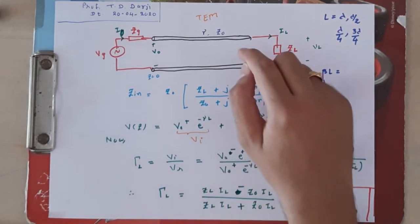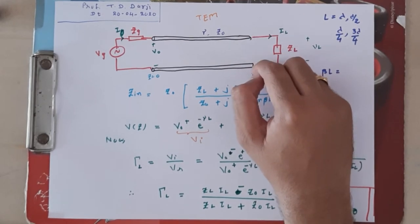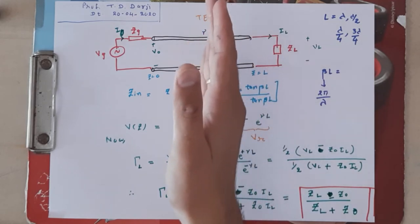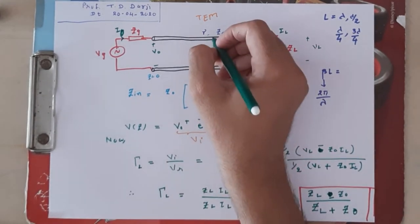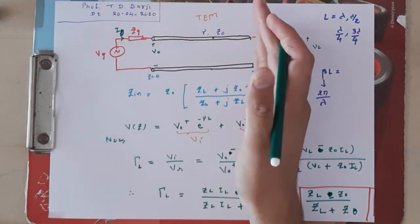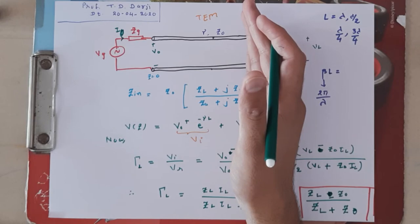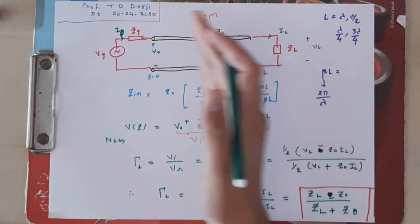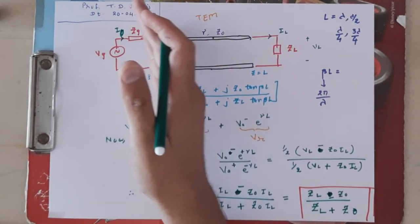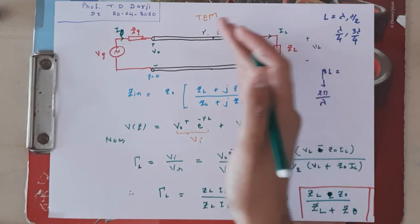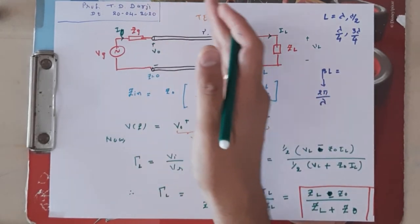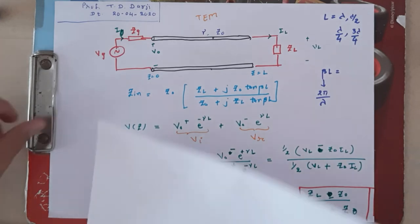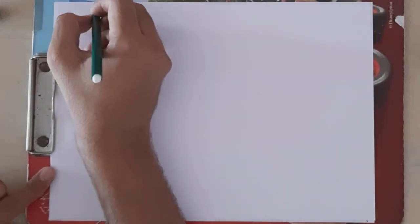We derived τ_L at the load side, but we also need the reflection coefficient at any intermediate point. Since transmission line parameters R, L, G, C are distributed, the line offers impedance at each and every point, so at each point some wave may be reflected back. We need to derive a generalized equation for the reflection coefficient at any point on the transmission line.